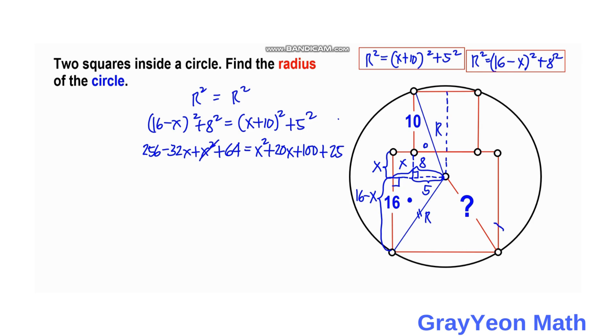We can cancel x squared. Put 20x to the left-hand side, so we have -32x - 20x = 100 + 25 - 256 - 64. The sum on the left gives us -52x, and on the right gives us -195. If we divide both sides by -52, x equals 3.75 units.